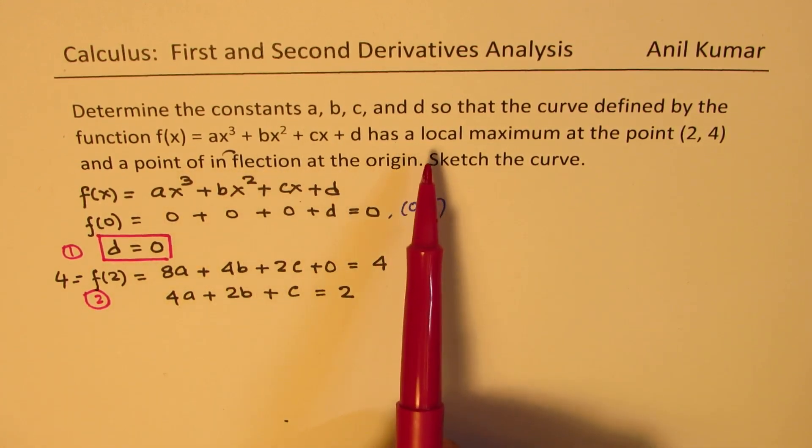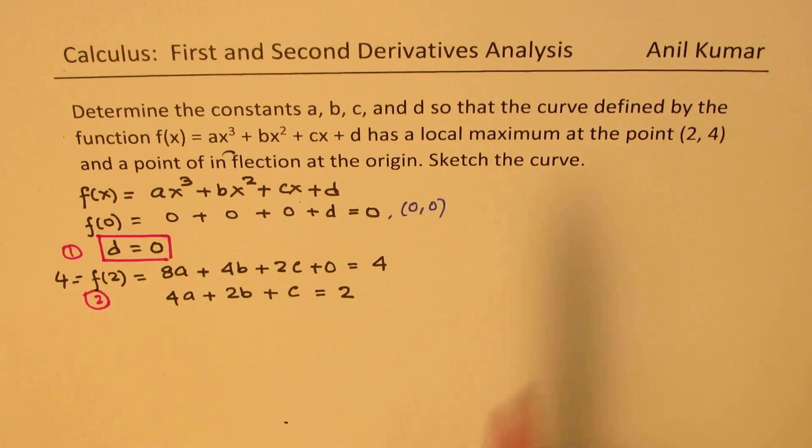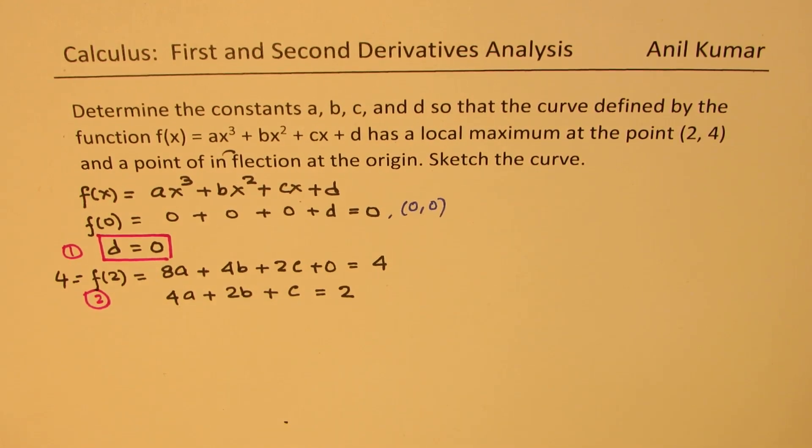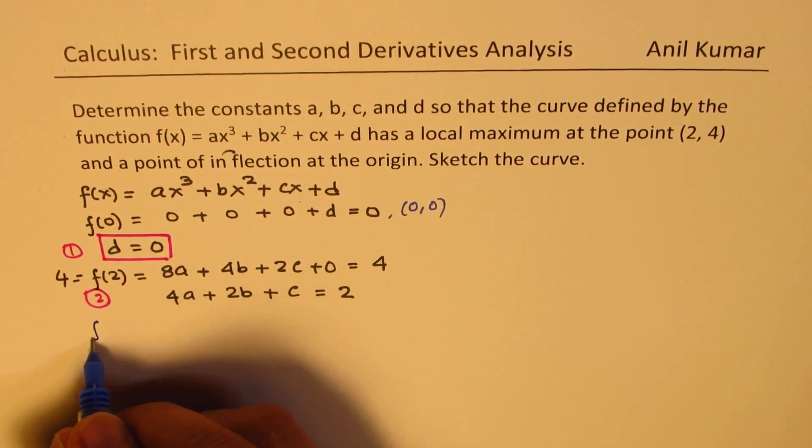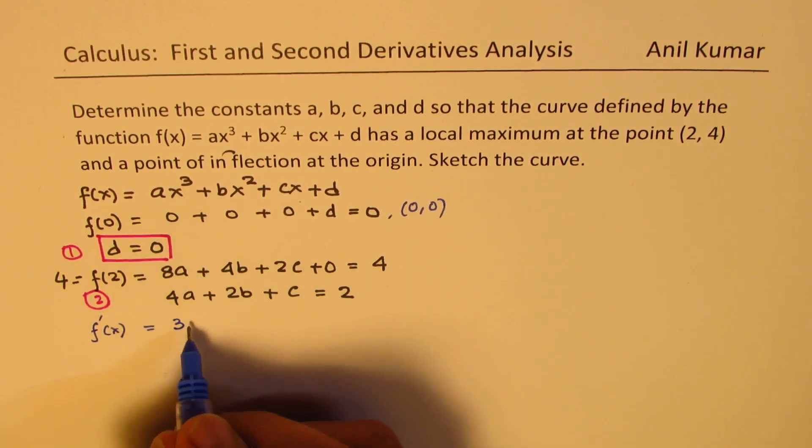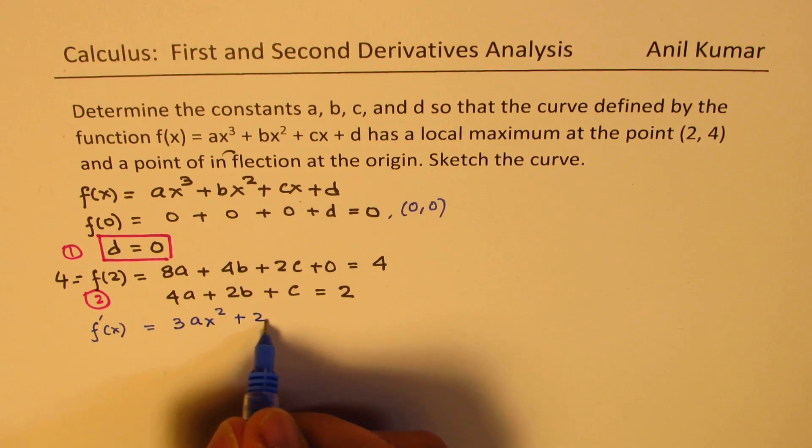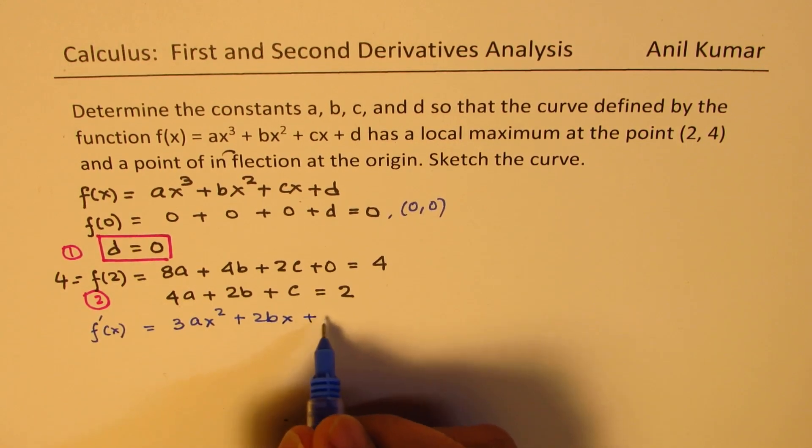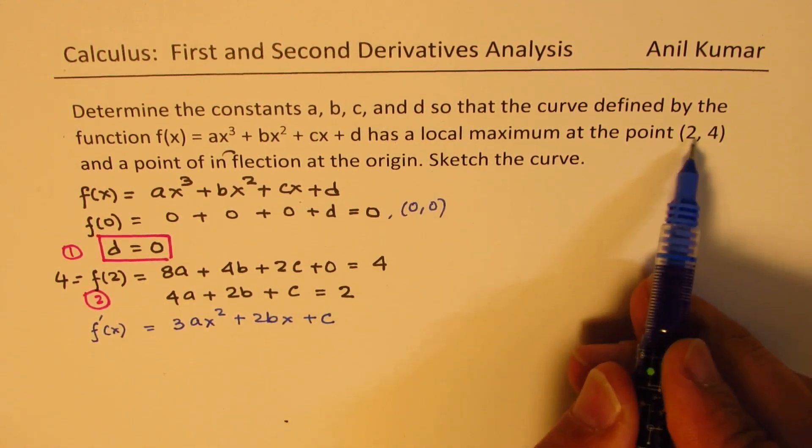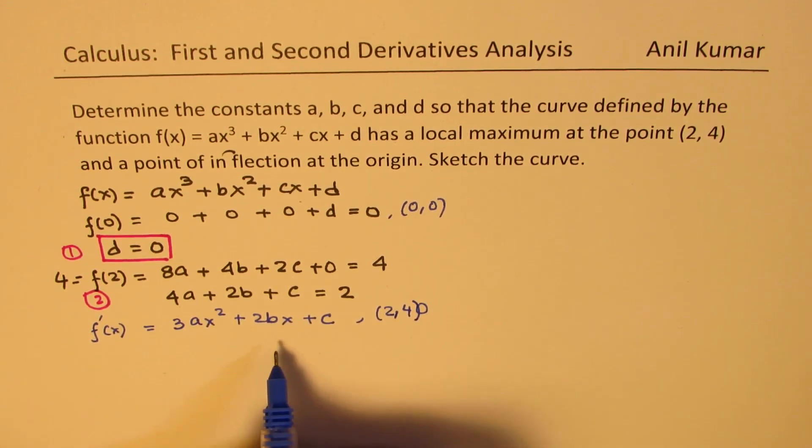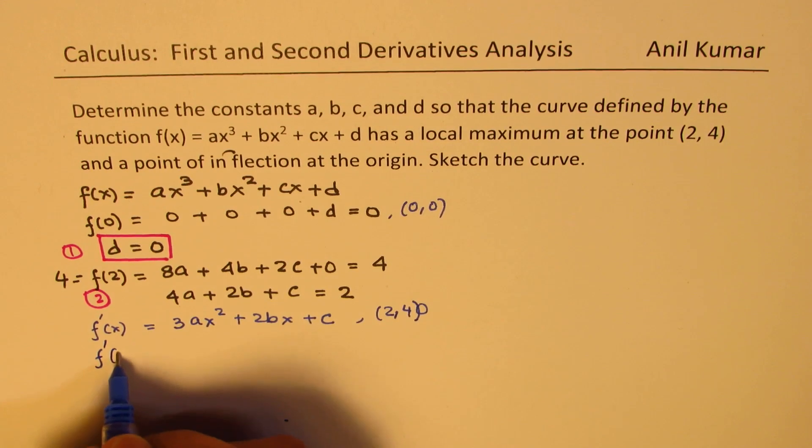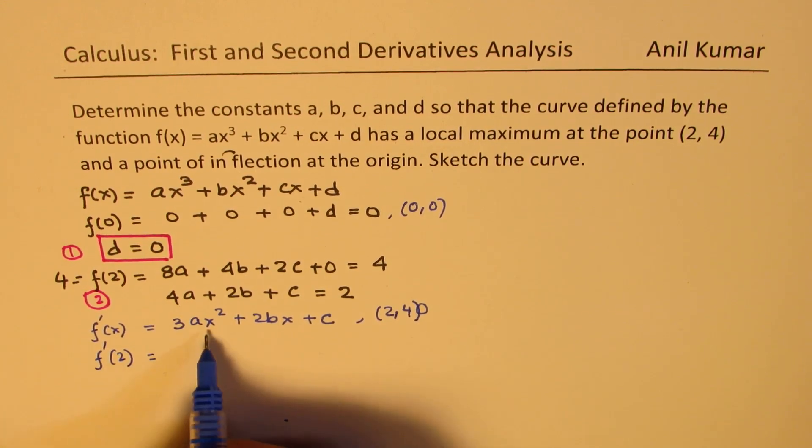Now, we are also given that the local maximum is at (2, 4). So that means the first derivative should be 0 at 2. So let's find the first derivative. First derivative for the function is 3ax² + 2bx + c. Now, at 2, we have a maximum. So at 2, the derivative should be 0. So that means the derivative at 2 is what? Substituting 2 here, we get 2² is 4, 4 × 3 is 12.